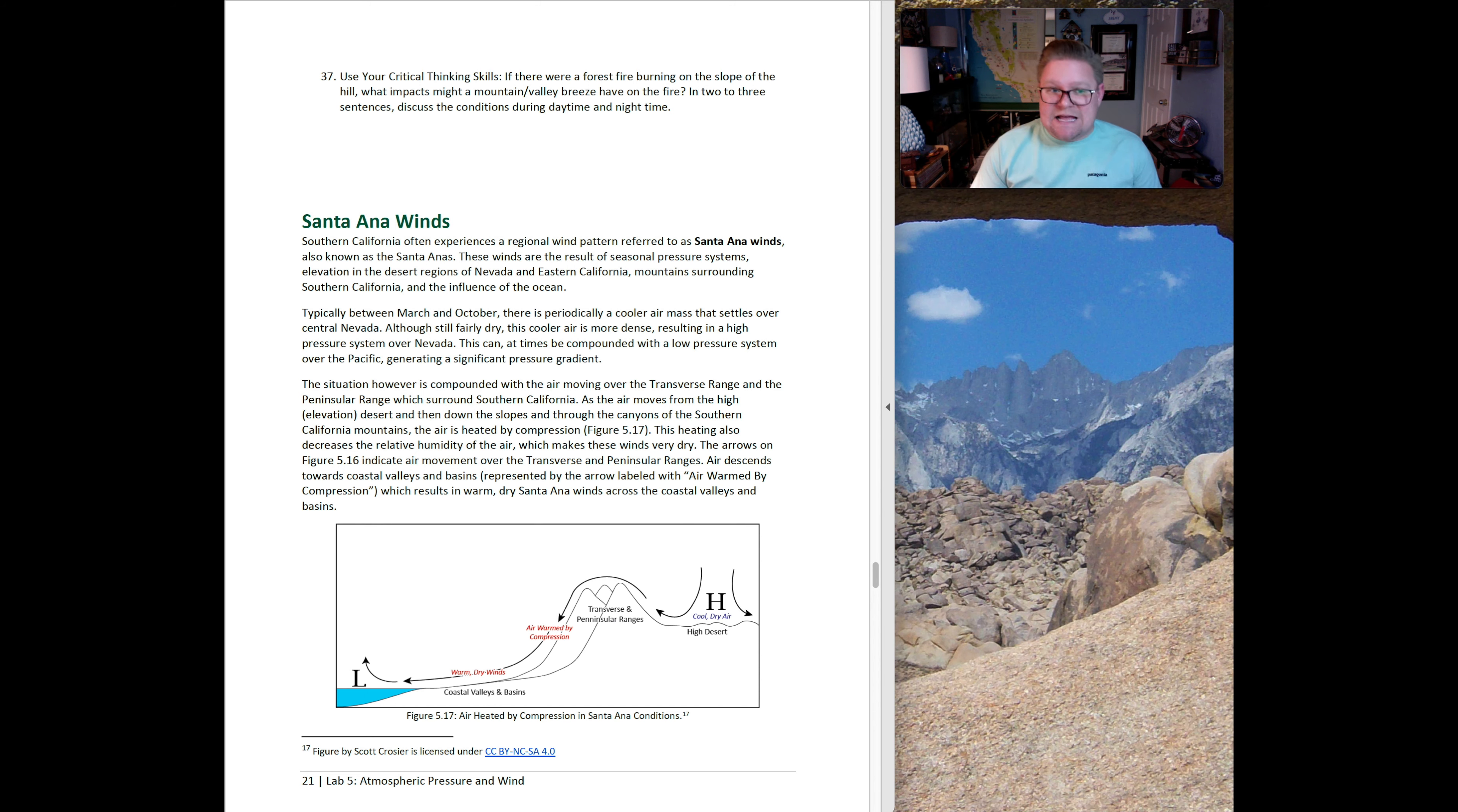Another thing I certainly deal with where I live are the Santa Ana winds. Typically between March and October, there is periodically a cooler air mass that settles over central Nevada. This cooler air is more dense, resulting in a high pressure system over Nevada. This can be compounded with low pressure systems over the Pacific, generating a significant pressure gradient. In this diagram that Scott made, we can see this very high desert, cool, dry air. High pressure is being forced down, so it's being pushed away. But then the ocean itself, that region is pulling air as well. So you're kind of getting pulled on both sides. We end up with these very warm by compression, aggressive winds.